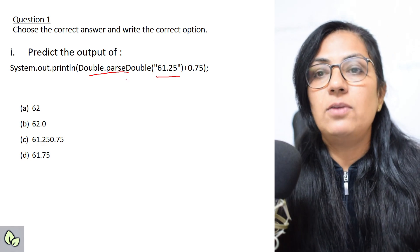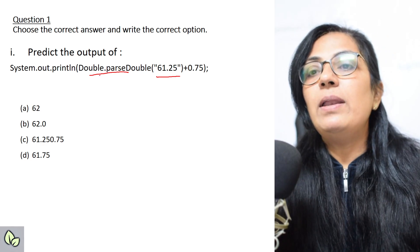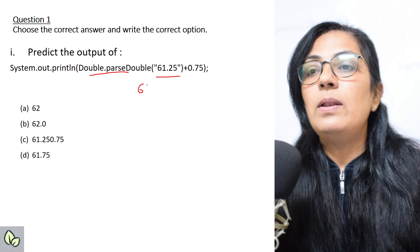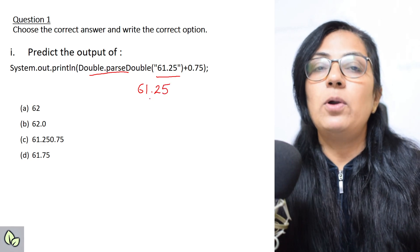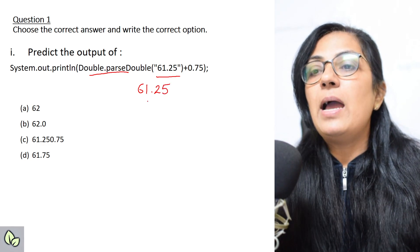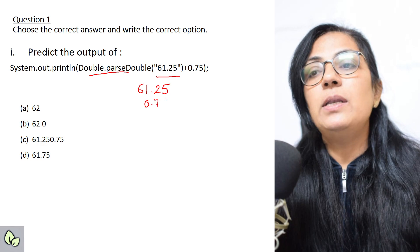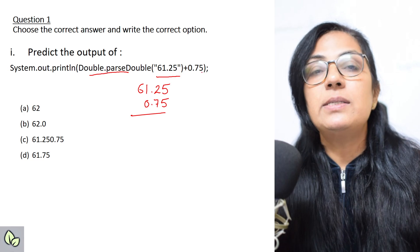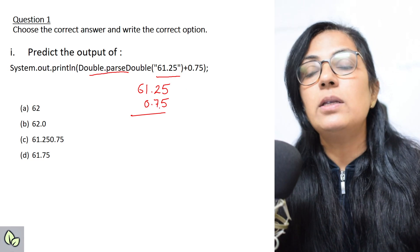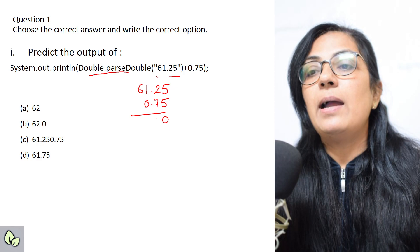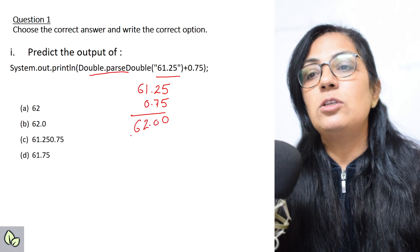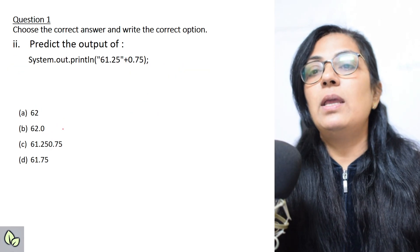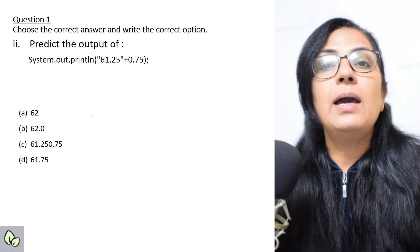When parsing with Double.parseDouble("61.25"), it is converted into double type 61.25. Then you add 0.75 to this. Since it is now converted to double data type, it can be added, and you will get the answer as 62.0. That is your correct answer.